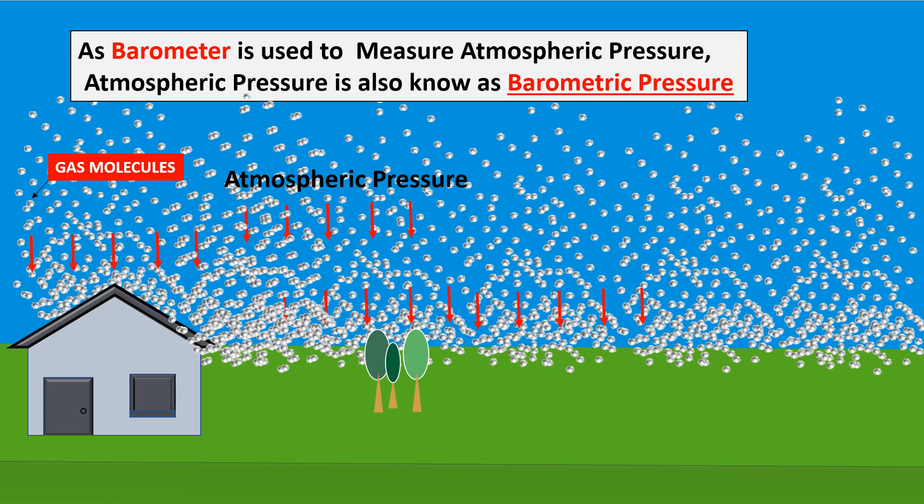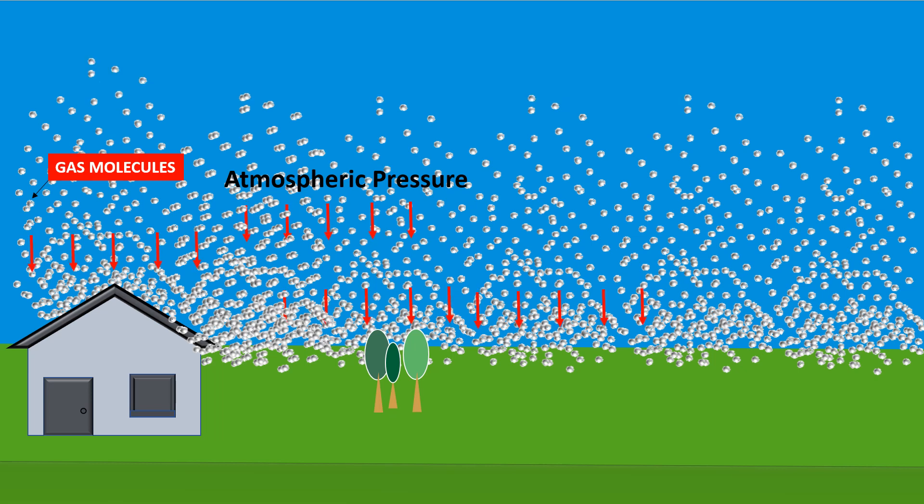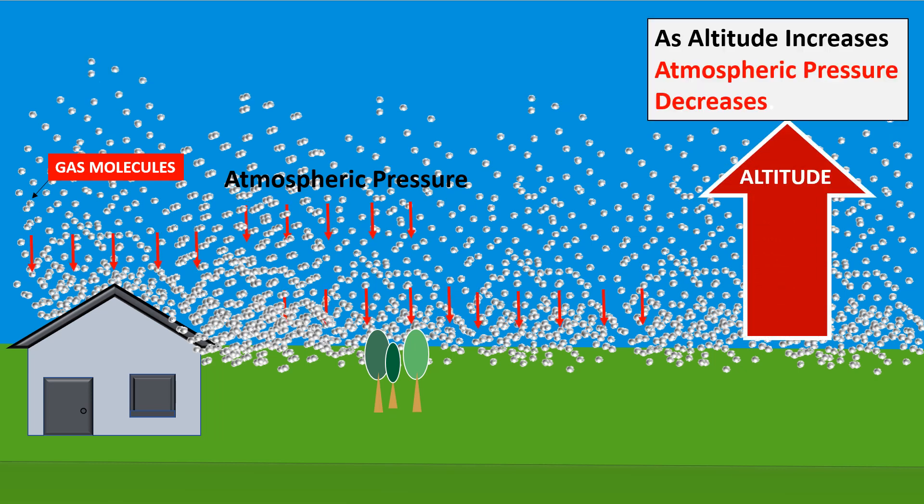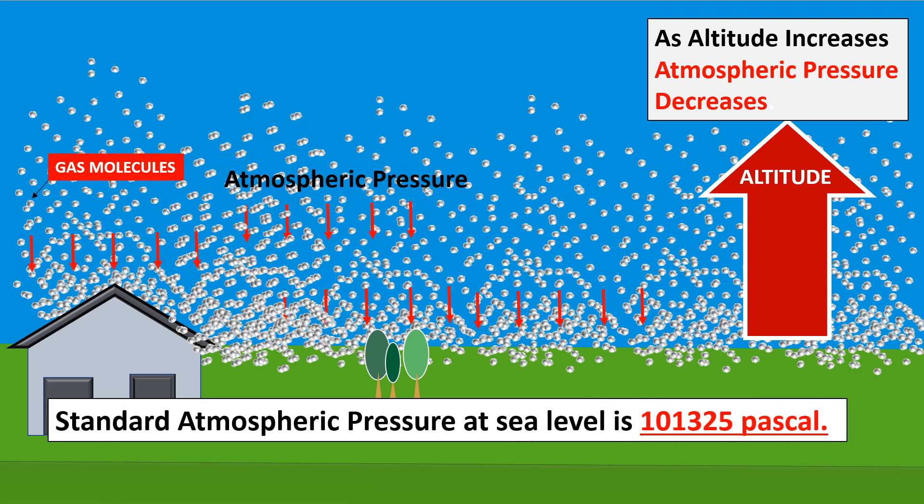The air or gases surrounding the earth becomes thinner and thinner as the altitude increases. And so the atmospheric pressure decreases as we go up. Standard atmospheric pressure at sea level is 101,325 Pascal.